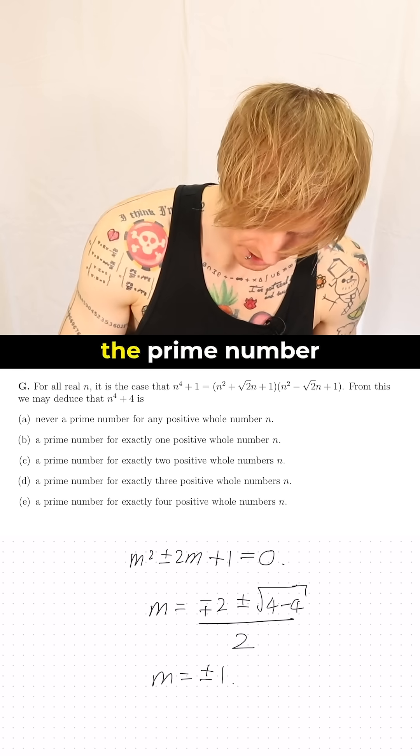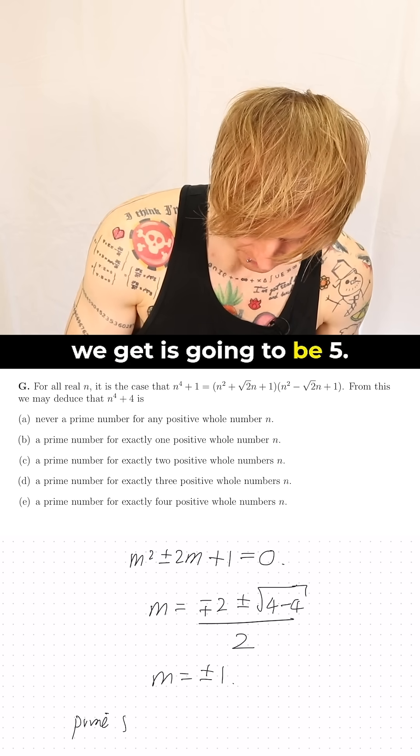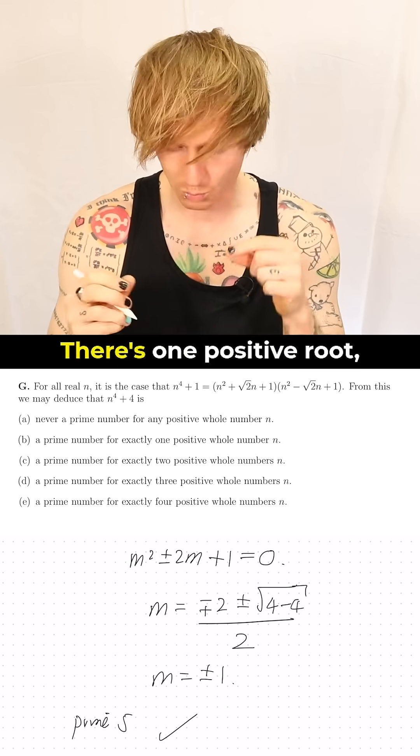Now we just have to check that works and we see that the prime number we get is going to be 5, which is prime. There's one positive root, so the answer is b.